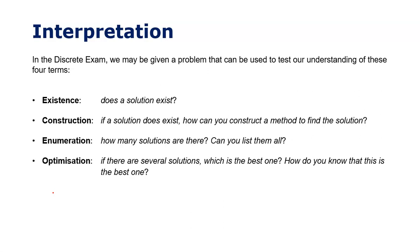Existence basically asks: is there a solution to the problem? For instance, what's the height of the Eiffel Tower — clearly there is an answer, I could measure it. But if I asked what happens before the Big Bang, I don't know if there is an answer. Similarly, with only real numbers, certain quadratics have no solution — so existence asks whether a solution exists at all.